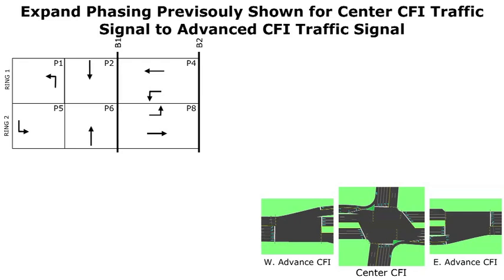I'm moving phases 1, 2, 5, and 6 arrows for better animation clarity. At the center CFI traffic signal in the lower right-hand corner, you can see how I've added the movements shown in the ring and barrier phases. I'm also adding the right turns at the center CFI traffic signal to operate concurrently with the protected left turns that are not on the CFI approaches at the center CFI signal.